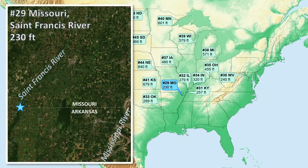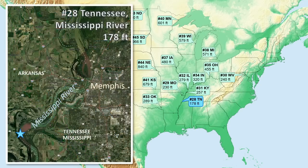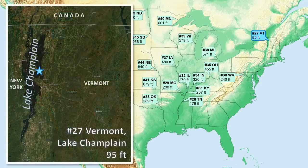Number 29 is Missouri, on the St. Francis River. Number 28 is Tennessee, back on the Mississippi. Number 27 is Vermont, at Lake Champlain — our first low point below 100 feet.